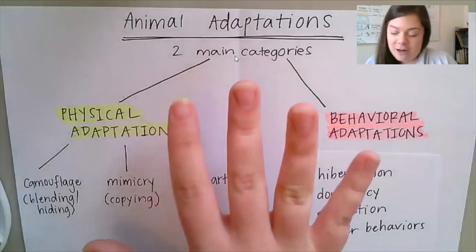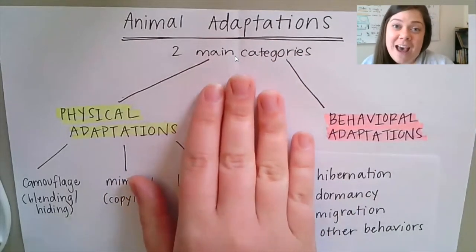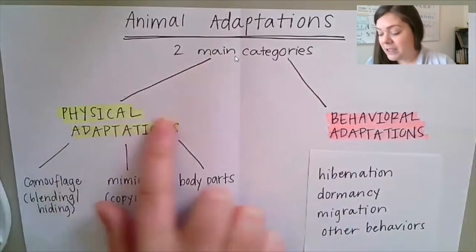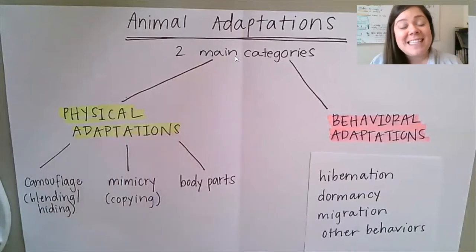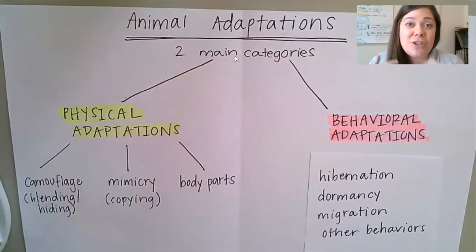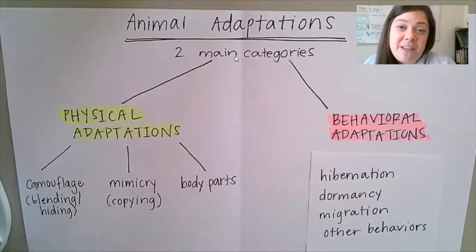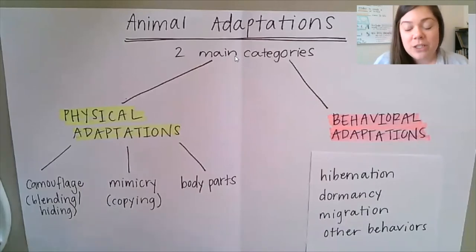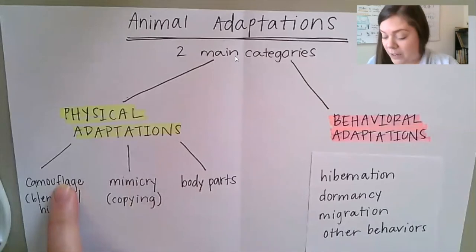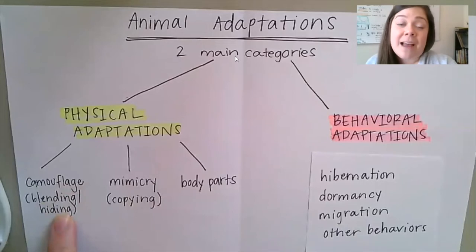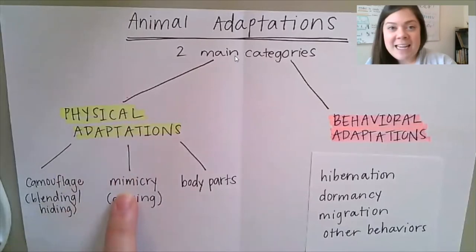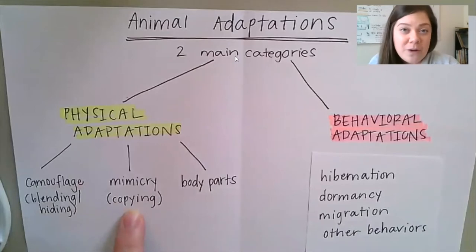If we take a look at our flow chart here, we can see that we discussed those two main categories of adaptation. The first category was physical adaptations — those are adaptations that we can see on an animal or that are a part of that animal's body, and are tools or resources that the animal can use in order to eat, find water, build shelter, or protect themselves. That first specific example we discussed last week was camouflage, which is blending in or hiding into your habitat and surroundings in order to avoid being discovered by a predator. That second example was mimicry, which was copying or mirroring what another animal looked like in order to hide from a predator as well.